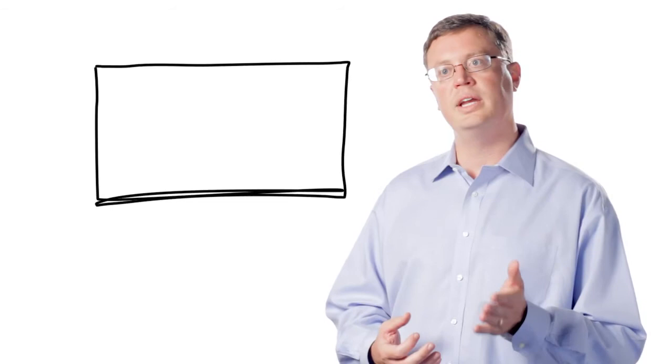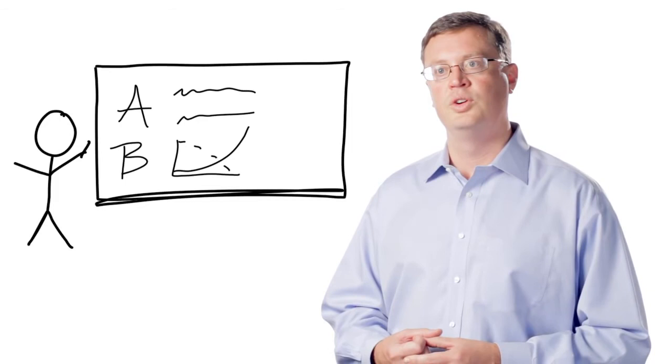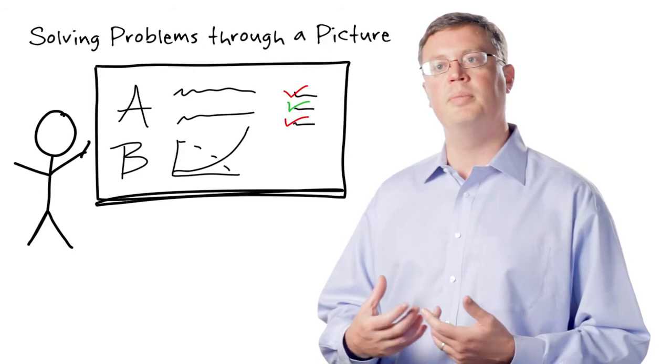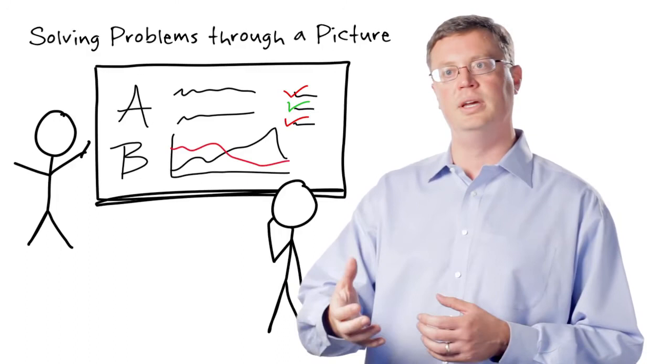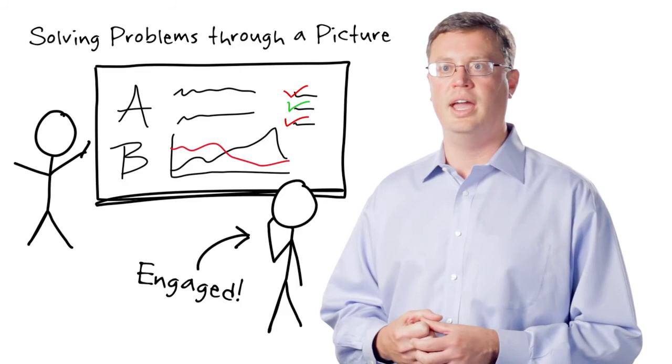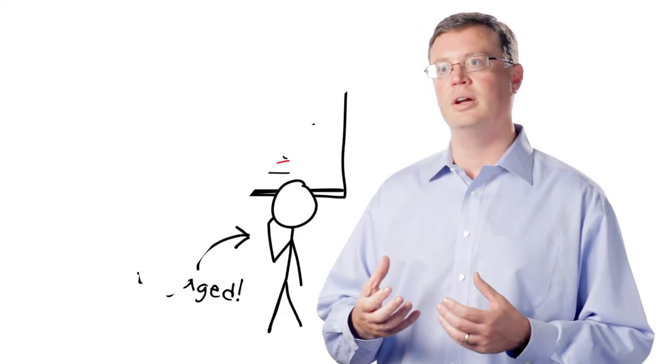But what does it look like to really engage an executive? One of the tools we've found that is extremely compelling is a whiteboard. So as you move in that conversation, standing up and presenting a framework, a model for solving problems through a picture. And it's just amazing the power of a visual where an executive will say, no, that's not exactly what my world looks like. That's not it. But let me show you kind of here's what it looks like. And as soon as they take the pen, you've got them.